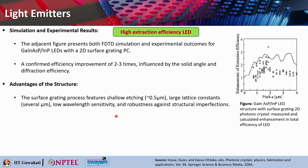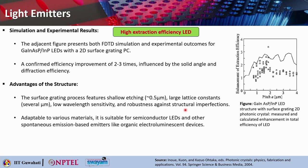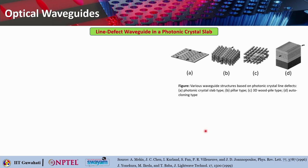The advantages of the surface grating structure include shallow etching of only about 0.5 micrometers, use of large lattice constants of the order of several micrometers, low wavelength sensitivity, and robustness against structural imperfections, meaning making those surface gratings is not that challenging. It is also adaptable to various materials, suitable for semiconductor LEDs and other spontaneous emission based emitters such as organic electroluminescent devices.